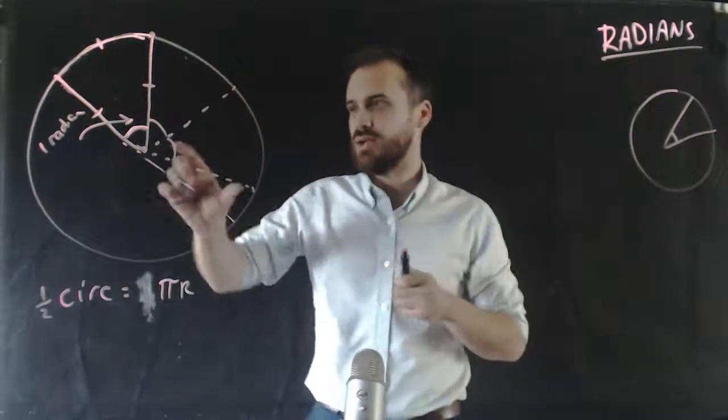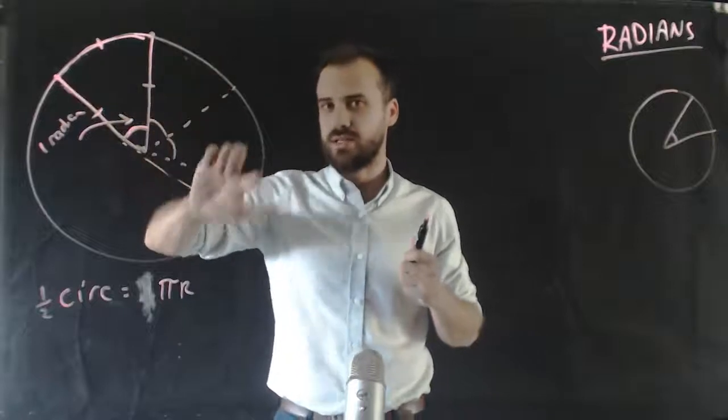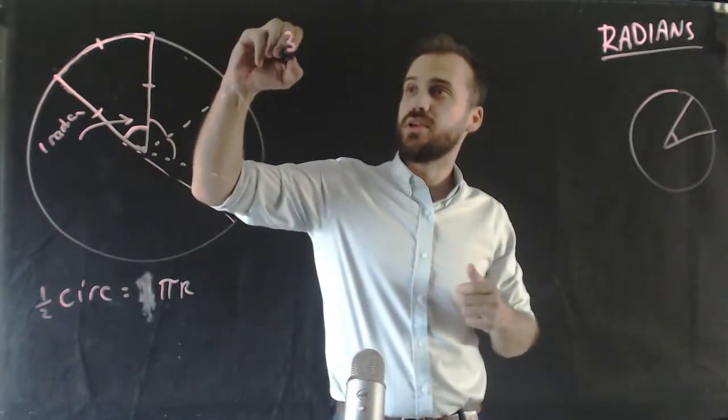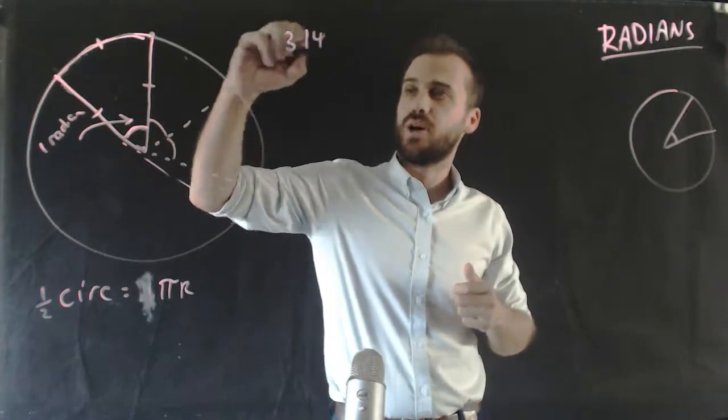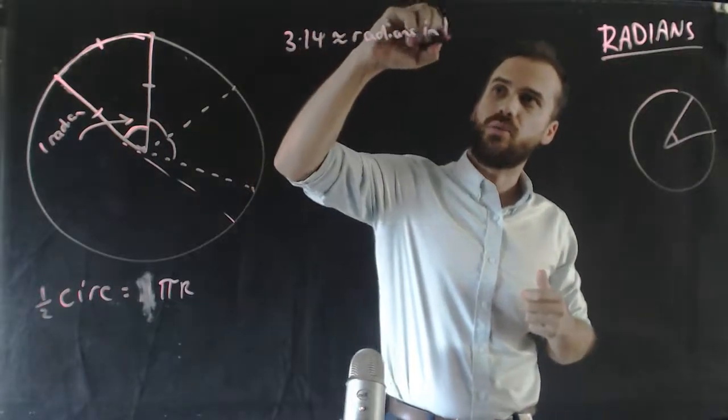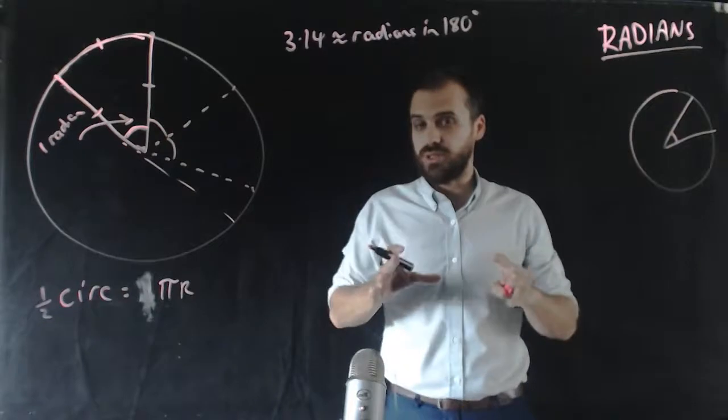is equal to pi, 3.14, times the radius. So that means that there are 3.14 approximate radians in 180 degrees. Approximately.